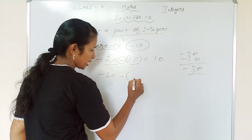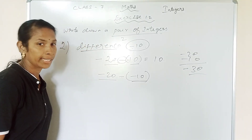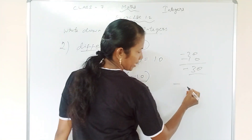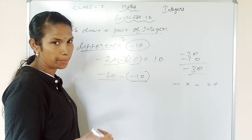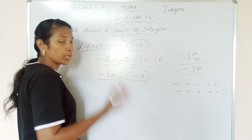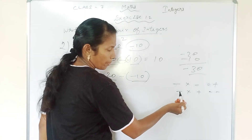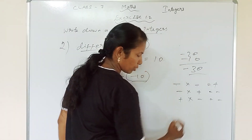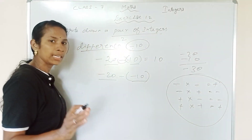Minus multiplied by minus gives plus. Minus multiplied by plus gives minus. Plus multiplied by minus gives minus. Plus multiplied by plus gives plus. So this is the sign multiplication table — you can remember this.